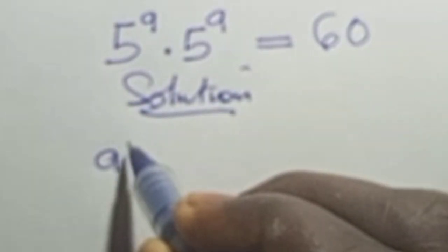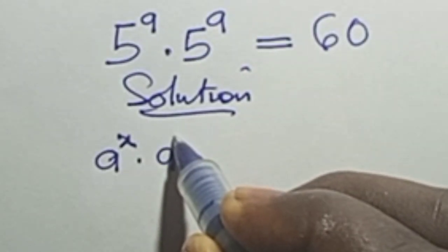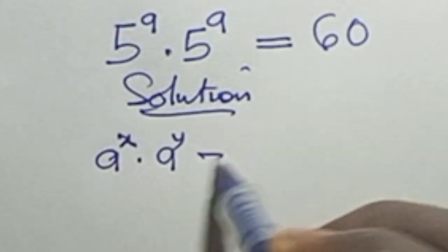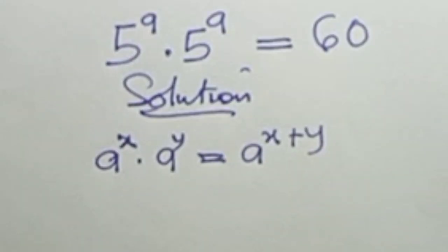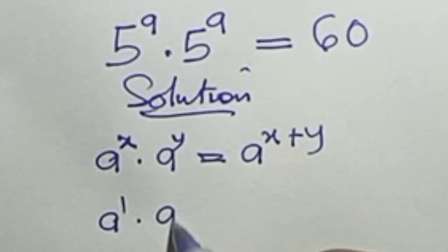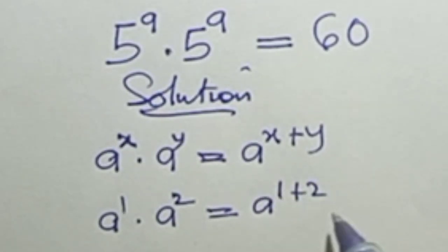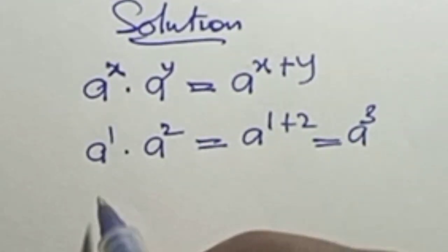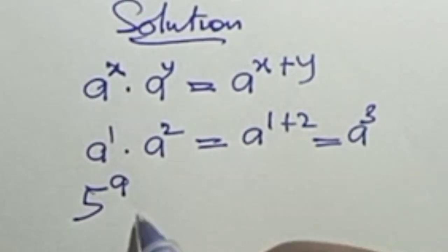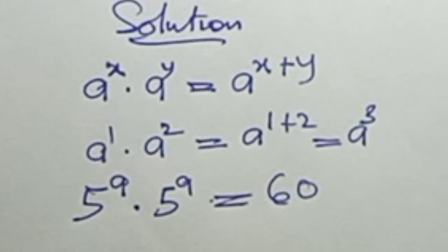Remember, if we have a raised to power x and a raised to power y, that is the same thing as a raised to power x plus y. For example, a raised to power 1 times a raised to power 2 is the same as a raised to power 1 plus 2. So our equation 5 raised to power a times 5 raised to power a equals 60 will become...